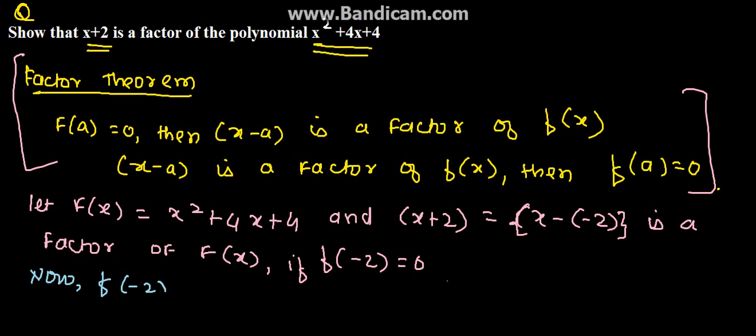Therefore, f(-2) equals (-2)²+4×(-2)+4, which equals 4-8+4, which equals 0.